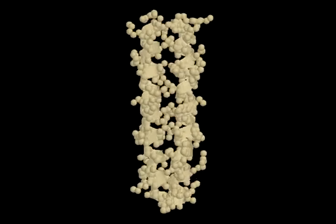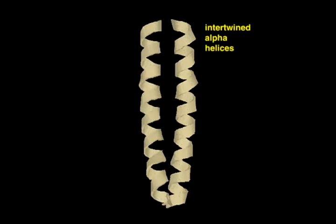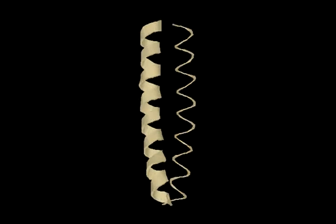In a typical coiled coil, two alpha helices wrap around each other to form a stable structure.